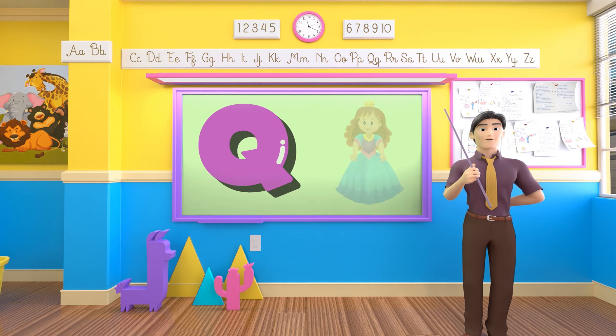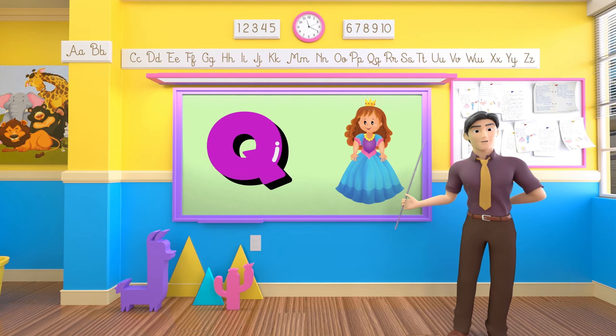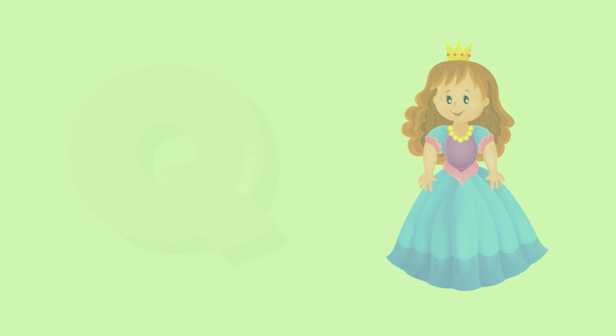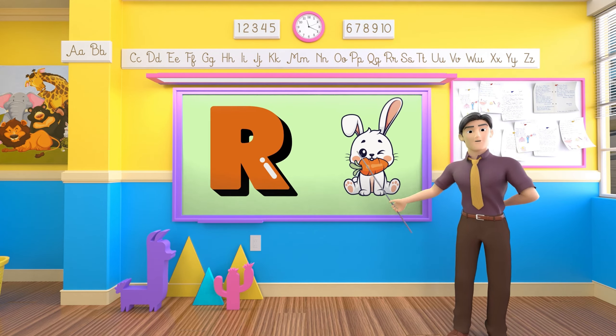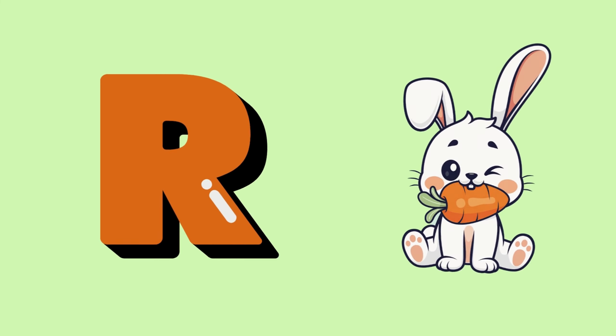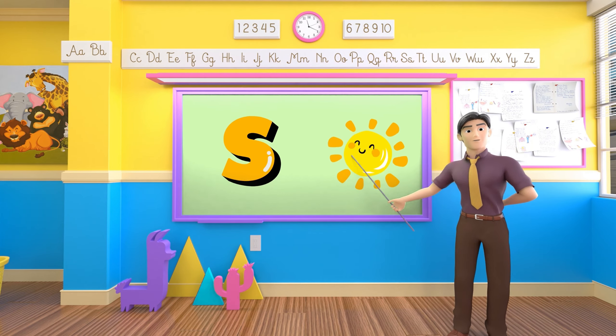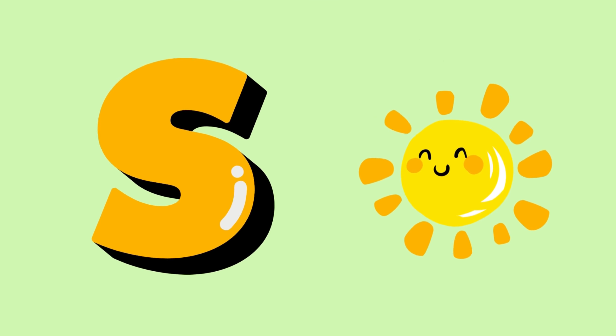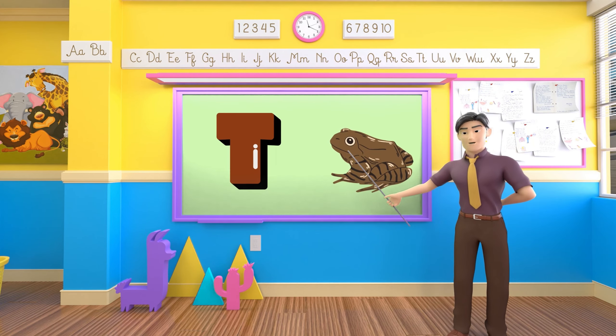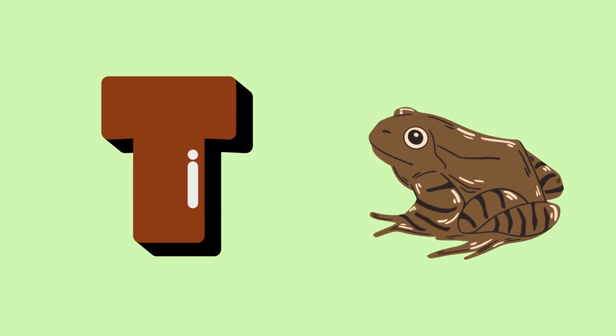Q is for queen, q-q-queen. R is for rabbit, r-r-rabbit. S is for sun, s-s-sun. T is for toad, t-t-toad.